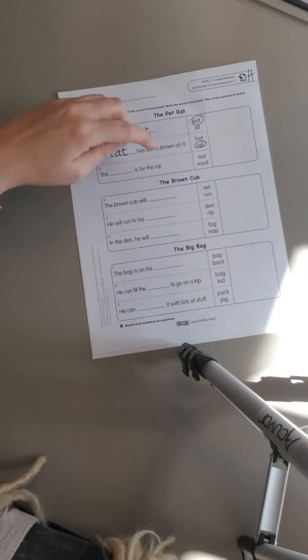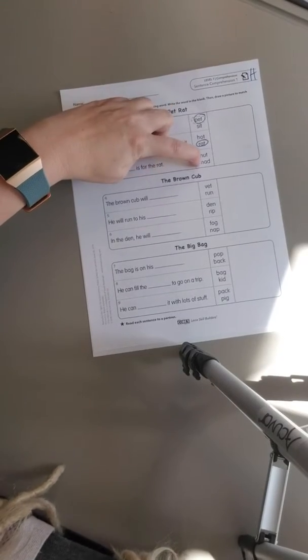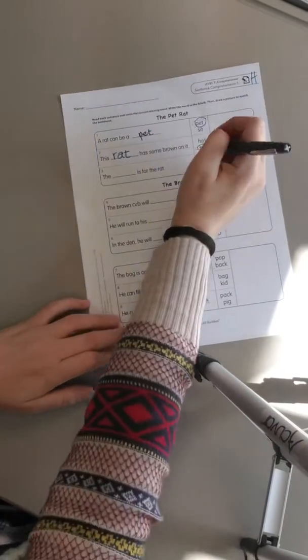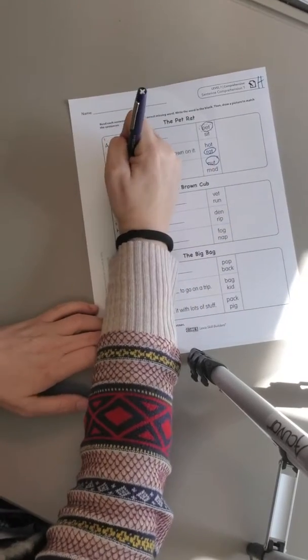The blank is for the rat. The nut is for the rat. The mad is for the rat. That doesn't make sense, so I'm going to pick nut. This nut is for the rat.